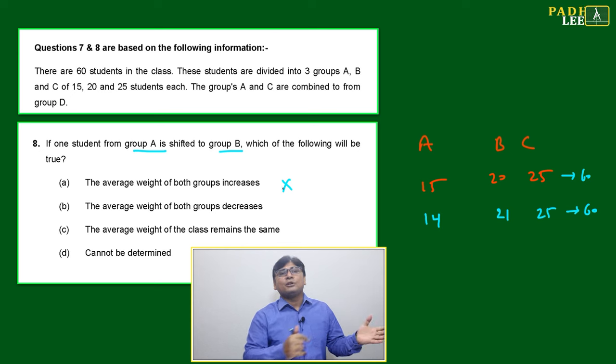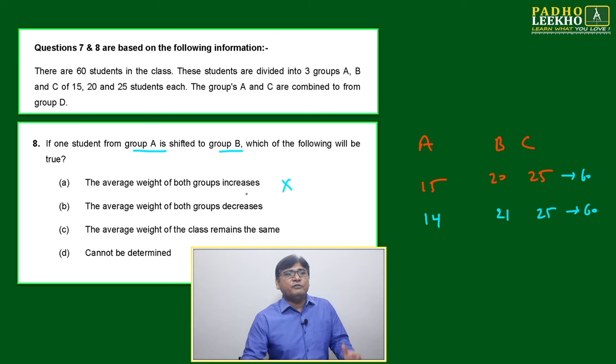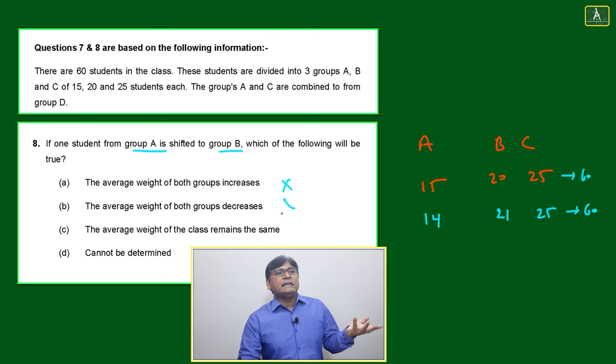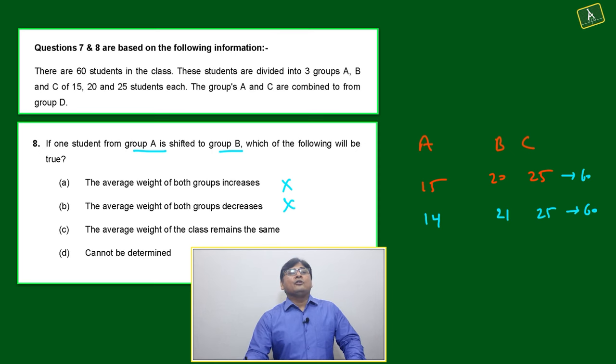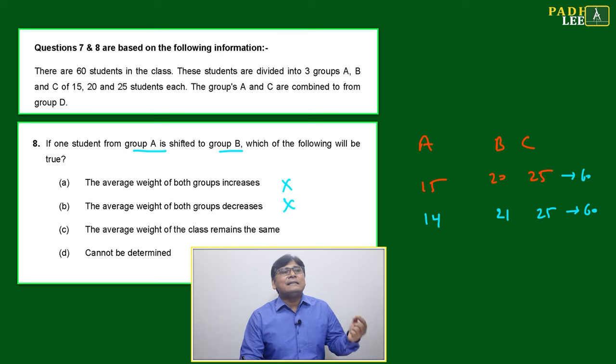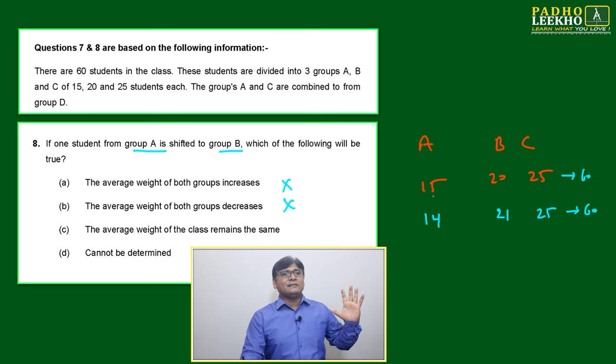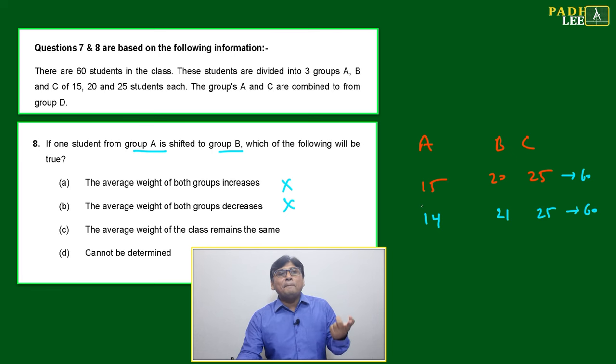With respect to the average of the group, if we are not sure whether average will increase or decrease, we can't determine if the average weight of the class remains the same. Option D, 'cannot be determined,' would be the most valid answer if option C was not given, because we don't have the exact number shifting from group A to group B.